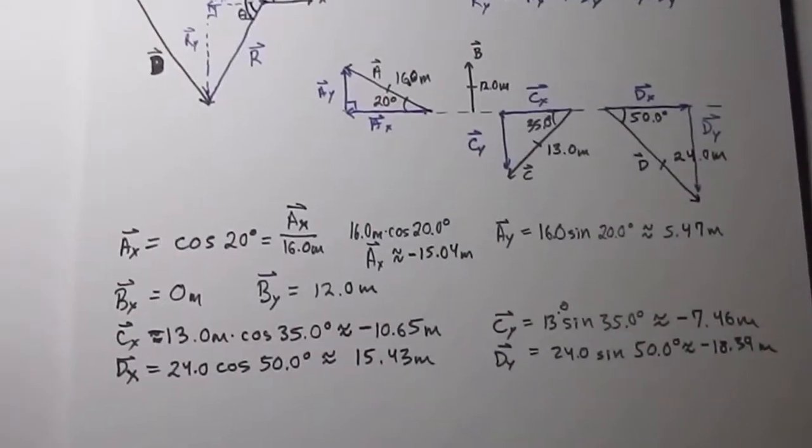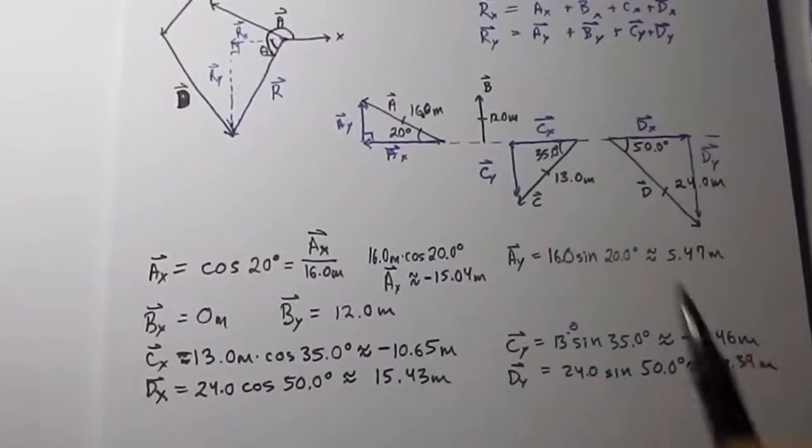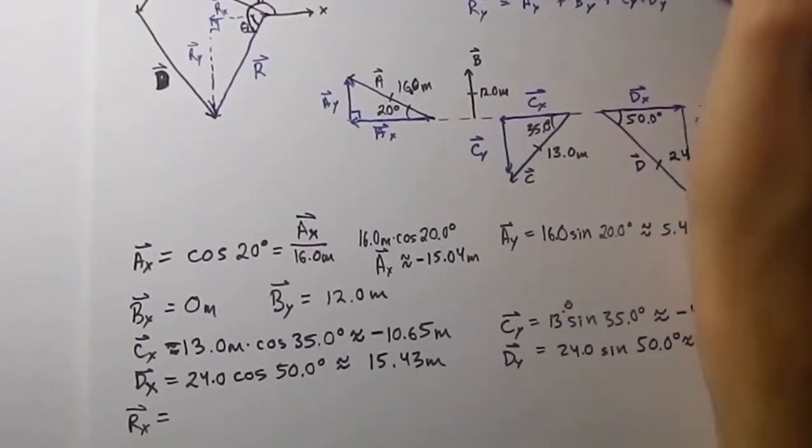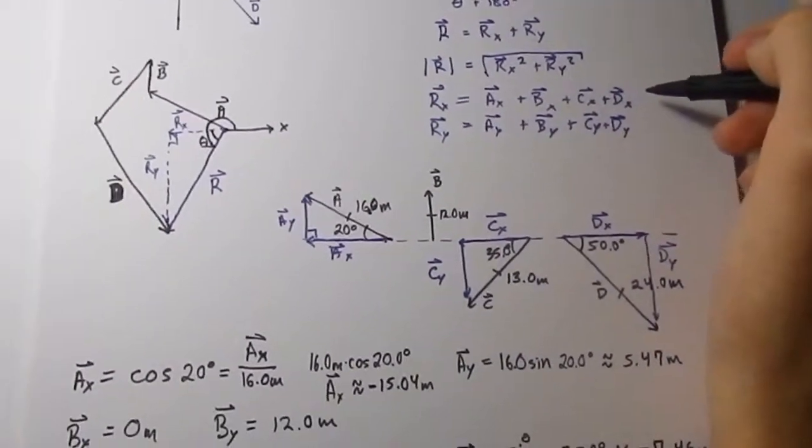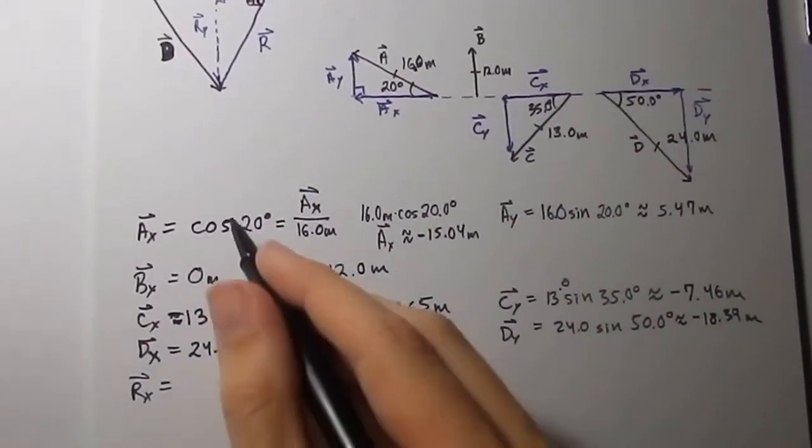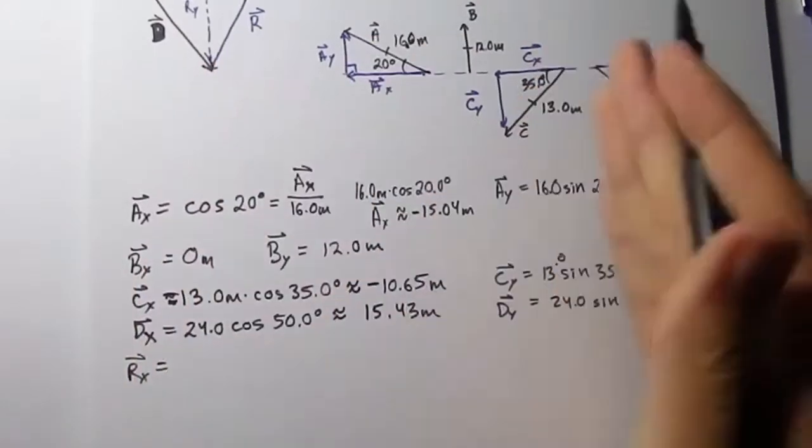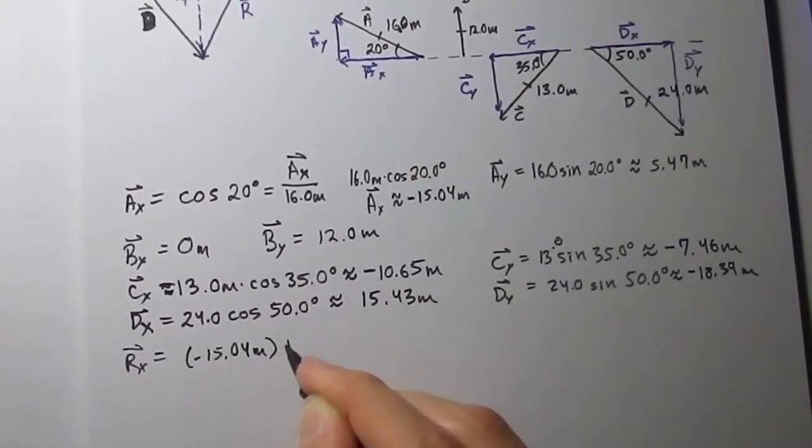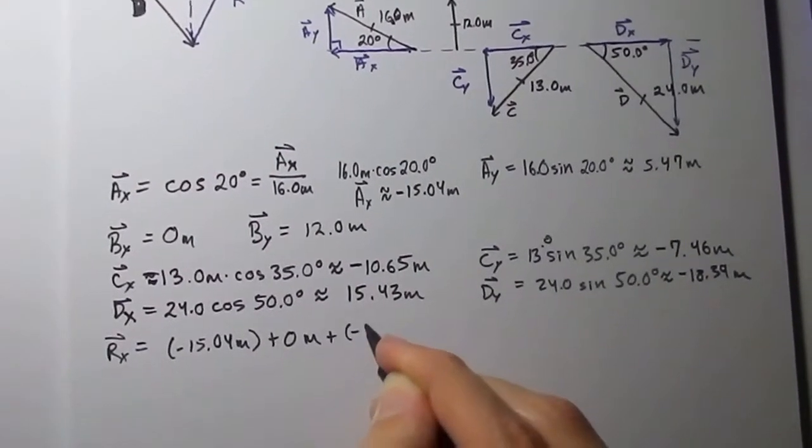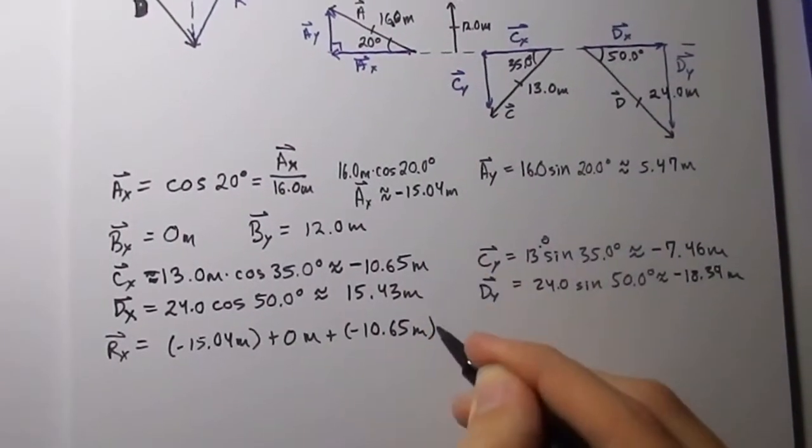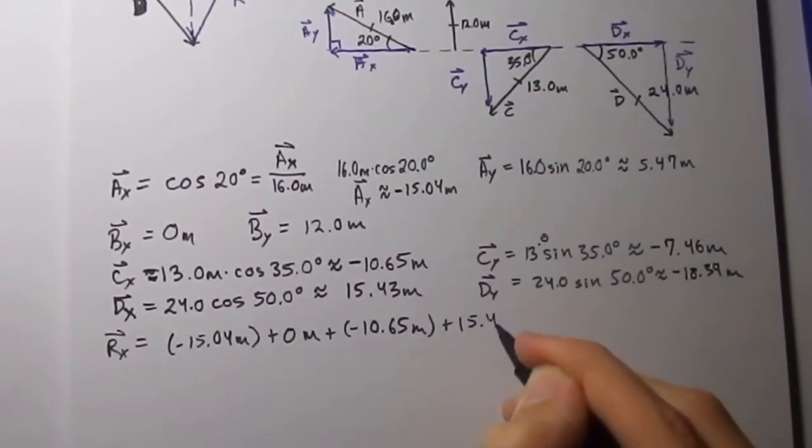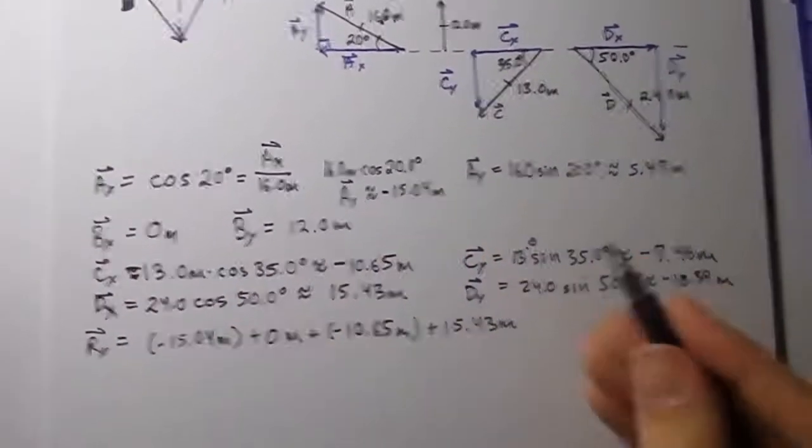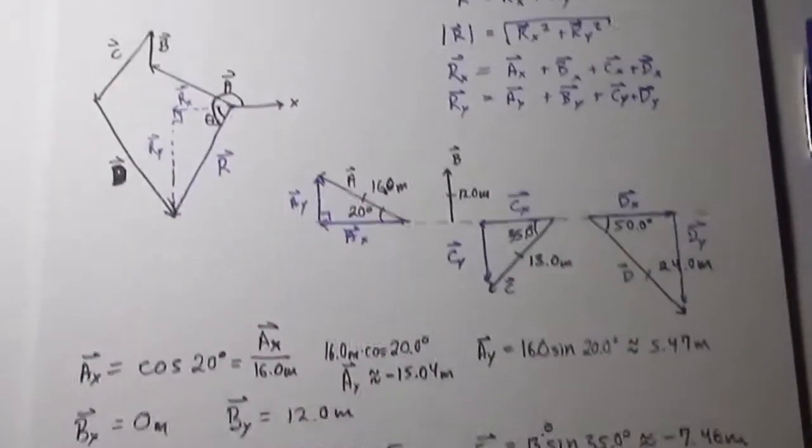And now we're ready to find the x-component of vector R. So the x-component of vector R is the sum of all the x-components. So let's just add them together. So you add up all the x-components, that's why if you set it up in this style, it should be easy. I got negative 15.04 meters, plus 0 meters, plus negative 10.65 meters, and then D, 15.43 meters. So you have the x-components of A, B, C, and D.